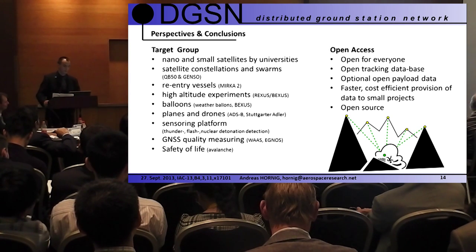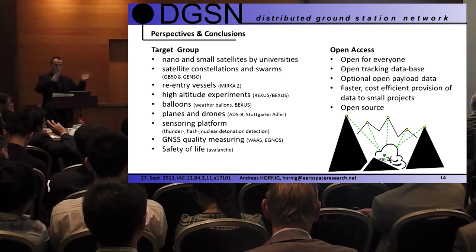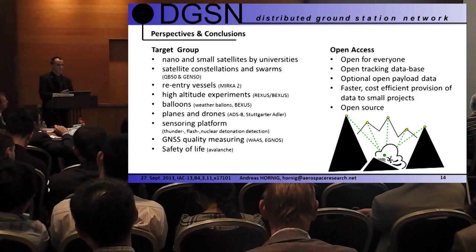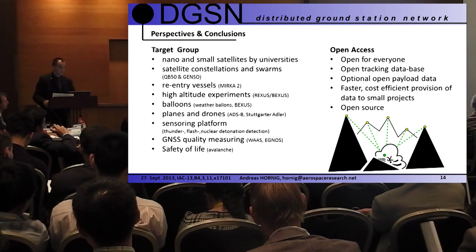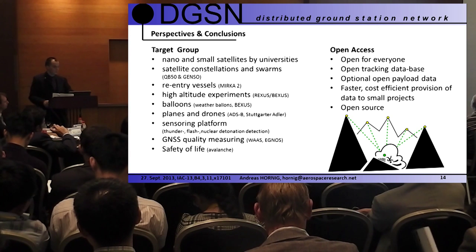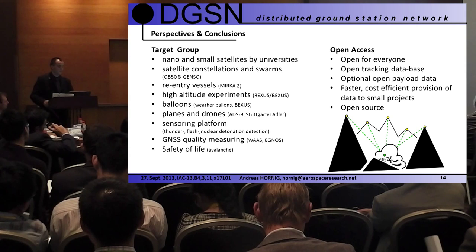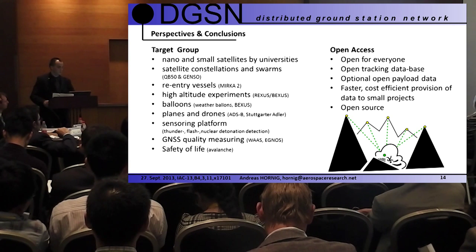Target groups include small and limited budget projects like small satellite constellations and swarms, where it's difficult to distinguish between them — like QB50. Reentry vehicles are another topic, because I'd like to know what kind of plasma effects reentry has on the calculations. Also high-altitude experiments, planes and drones, sounding platforms where you can attach sensors and measure air quality, weather, and GNSS quality — which has also been done by NASA.